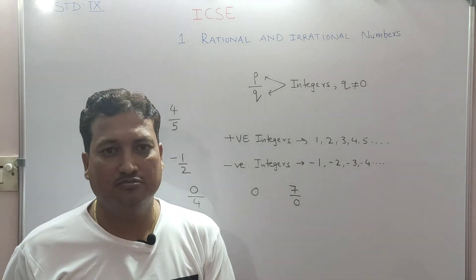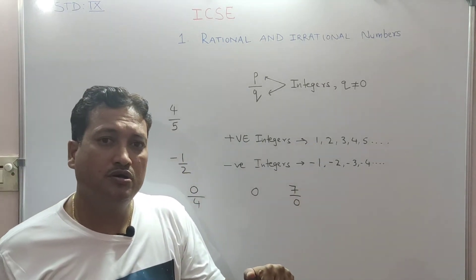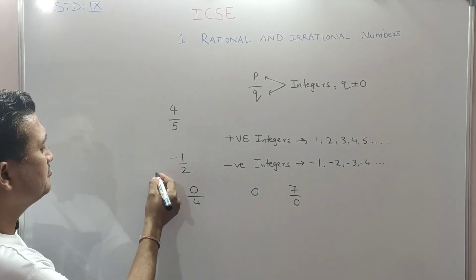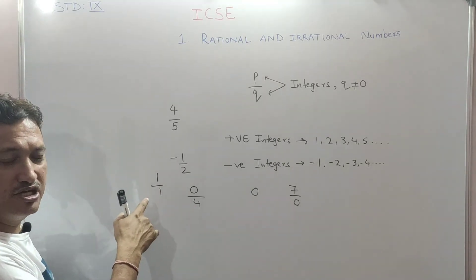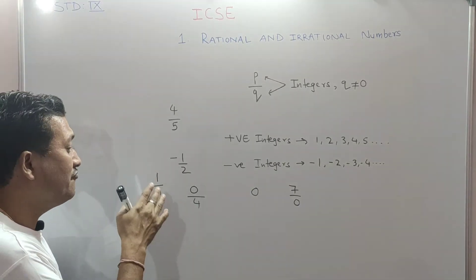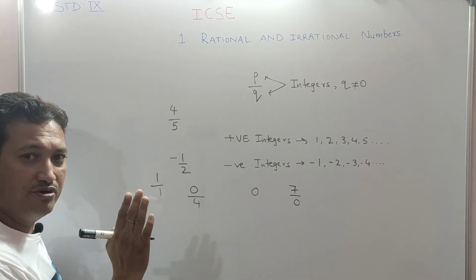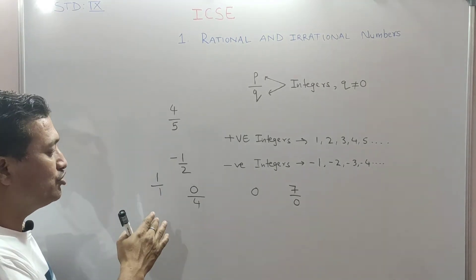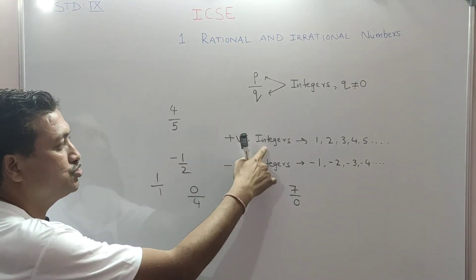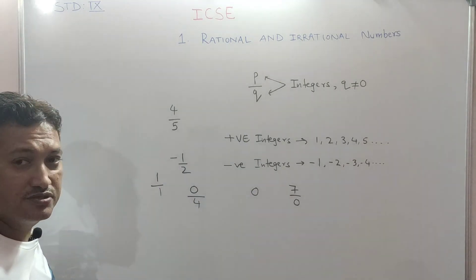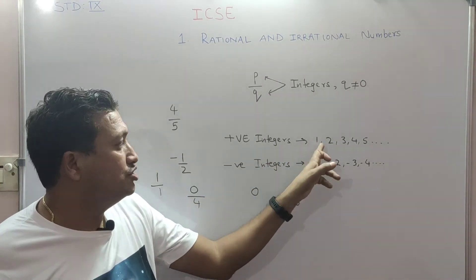Every integer is also a rational number. For example, the integer 1 can be written as 1 upon 1. The meaning of the number doesn't change — the value of this fraction is still 1. Now we can see it is a fraction where the numerator is an integer and the denominator is also an integer, so 1 upon 1 is a rational number. That's why the integer 1 is a rational number.